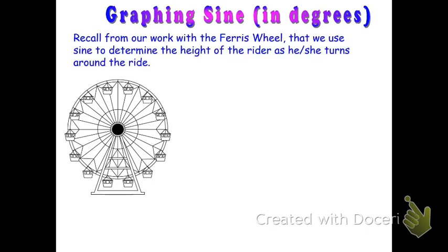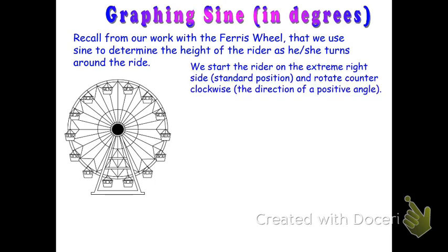Recall our work with Module 6 with the Ferris wheel — we used sine to determine the height of the rider as he or she turns around the ride. We start the rider on the extreme right-hand side of the Ferris wheel. We call that the standard position, which is where the positive x-axis is. Then we rotate in a counterclockwise direction, which is a positive angle of revolution.